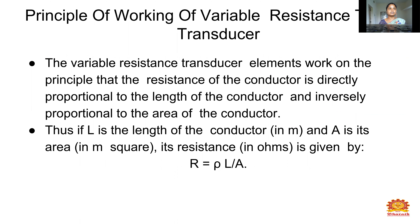The variable resistance transducer elements work on the principle of the resistance of the conductor, given by the formula R is equal to rho L divided by A. The resistance is directly proportional to the length of the conductor and inversely proportional to the area. The unit of resistance is ohm, length is meter, and area is meter square. Here, L is the length, A is the cross-sectional area, and rho is the resistivity of the resistance material.